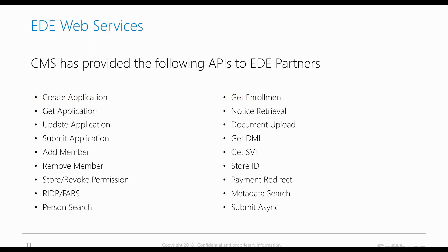CMS has provided the following APIs to EDE partners: create application; get application by identifier; update an application in progress; submit an application; add members to an application in progress; remove members from an application in progress; store or give permission to an EDE entity to work on the application; revoke permission from an EDE entity; RIDP FARs for identity proofing; person search providing applications the person is enrolled in; get enrollments; retrieve notices; upload document; get data matching issues; get SEP verification issues; store identifier; payment redirect; metadata search to search metadata records; and submit asynchronously.